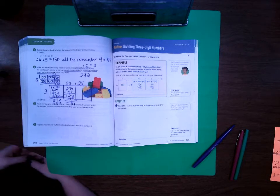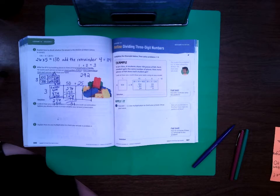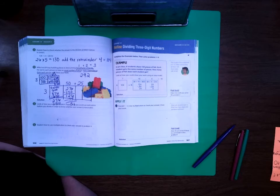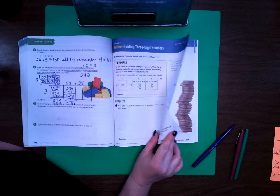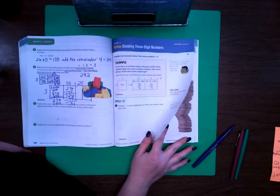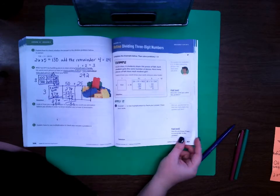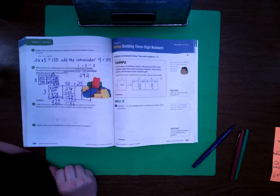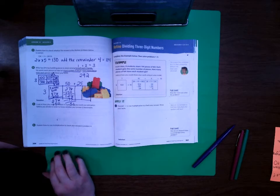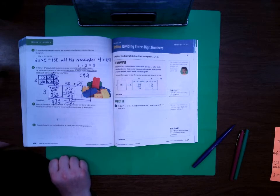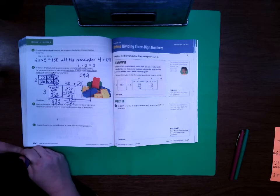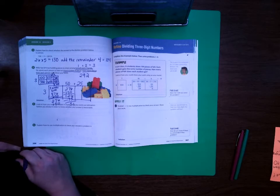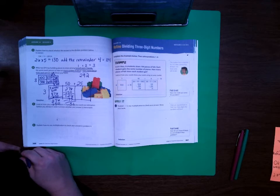Hi this is lesson 14 session 4 of 4th grade ready classroom mathematics. We are working on dividing three-digit numbers. Students, you should have completed pages 307 to 310 before you begin watching this video. This video is to check and see if you completed the work correctly. So if you have not done that yet please pause this video and go complete those and then come back when you are finished.